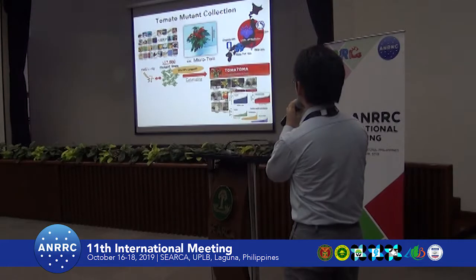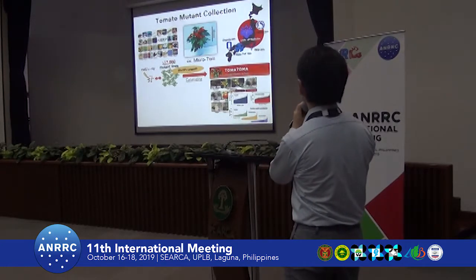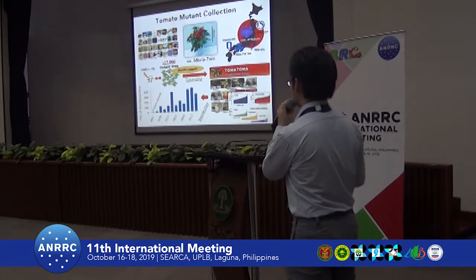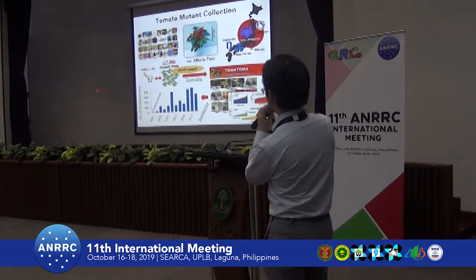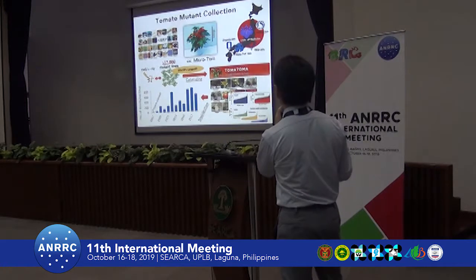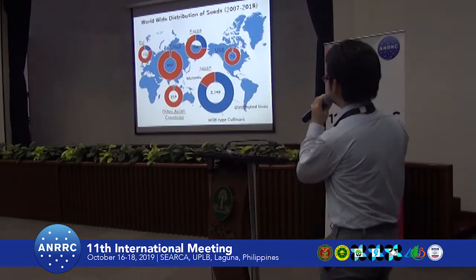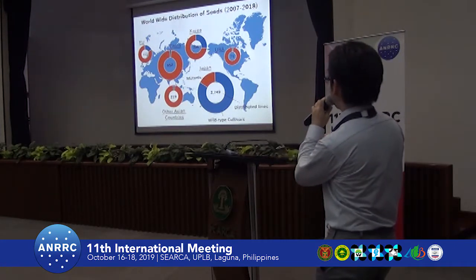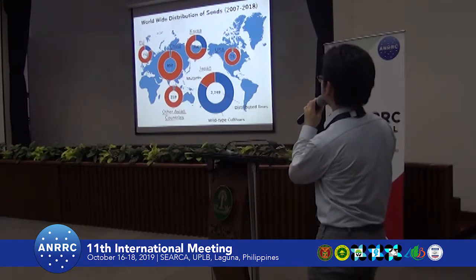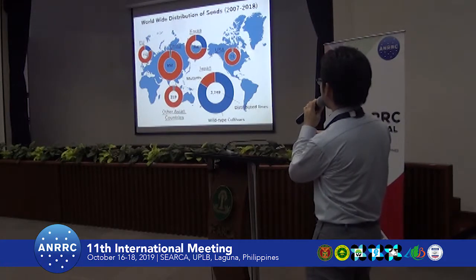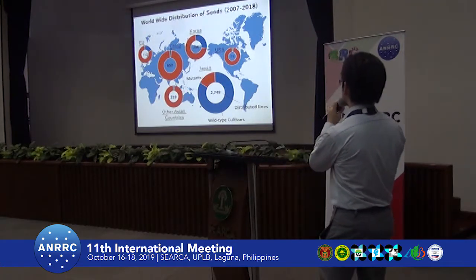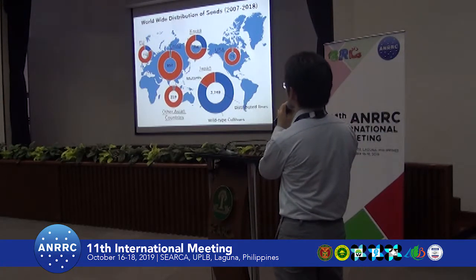We are cataloging these mutant lines on the Tomatoma website. We are distributing not only to Japanese researchers, but also to researchers all over the world. We just started in 2007, and now we are distributing more than 800 lines per year. The most seeds were distributed inside Japan, but the second largest group are Asian countries — China is the largest, followed by Korea, and also other Asian countries including Indonesia and the Philippines. More or less seeds also go to Europe and the US.